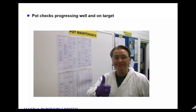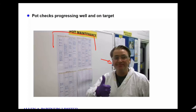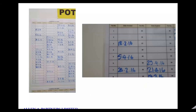Here's the system in progress. You can see a happy maintenance man with simple visual management going on behind him. A fair bit of work has been done — pots have been washed and maintained.